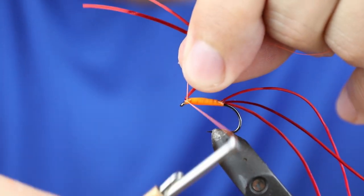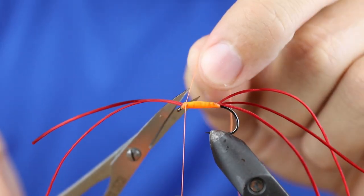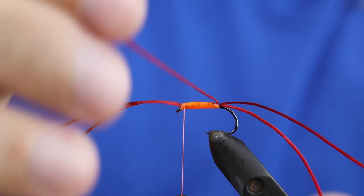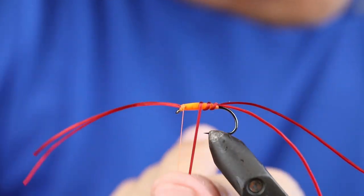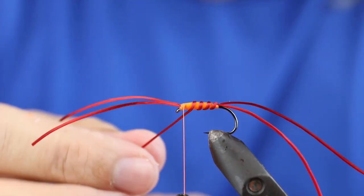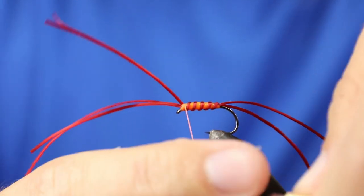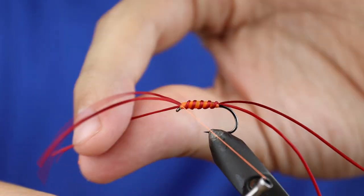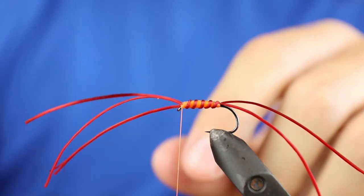And we'll grab one that we've already done. So all we need to do is come back in with the thread, take the rib, and then we're going to wrap it around. Make sure you're happy, and when you are, all you need to do is tie it off and cut away the excess.